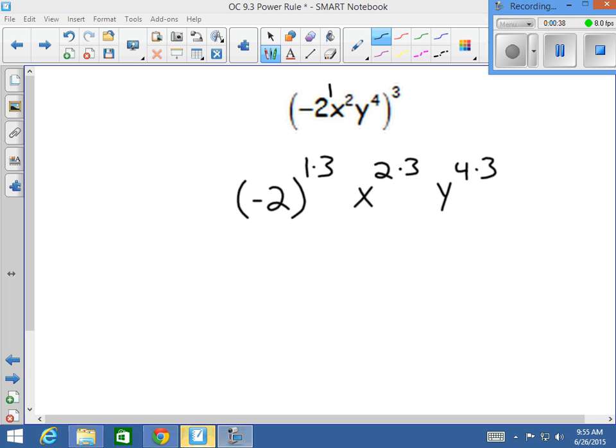1 times 3 is 3, so I get negative 2 to the third power. 2 times 3 is 6, and 4 times 3 is 12, so we get x to the sixth power and y to the twelfth power.